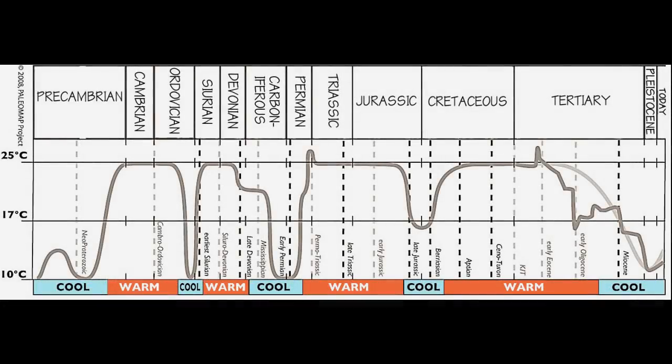Some of you may have seen this graph before, and this is really why I laugh at people with global warming. Basically, if you look, the dark grey line is the actual temperatures taken from ice cores, sea sediments and other sources, and the light grey line is the current climate model, which as we all know is wrong. You can see we've got the hockey stick here at the right hand edge.